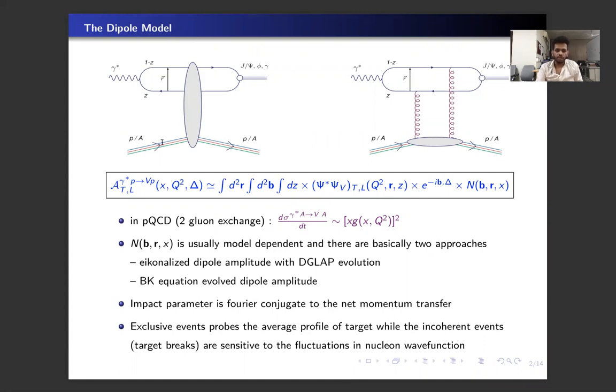The exclusive events where the target stays intact probe the average profile of the target, while the incoherent events where the target breaks up are sensitive to the fluctuations in the nucleon wave function.